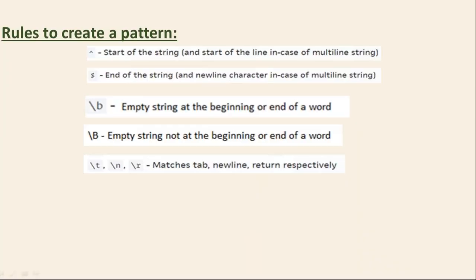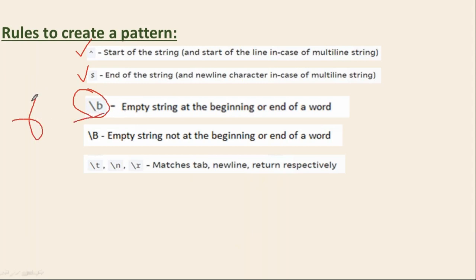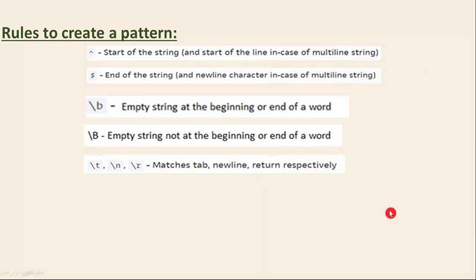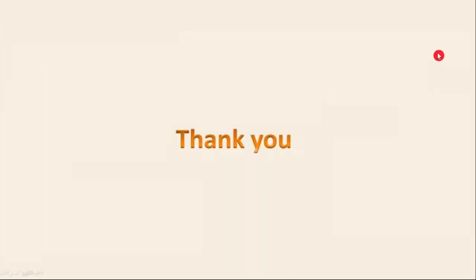So these are the simple pattern rules to create your pattern. The important things are the starting and ending anchors, and \b is very, very important if you want to look for a word. While using \b, use a raw string — that's why from now onwards while going forward, whenever I create a pattern I will use the raw string prefix. That's it. Thank you for watching this video.